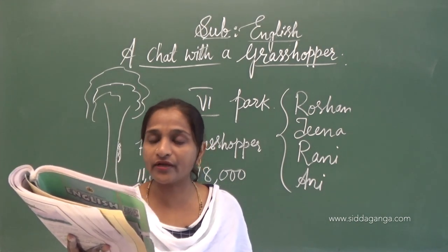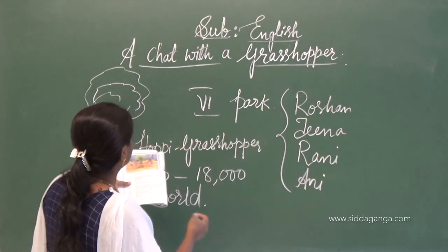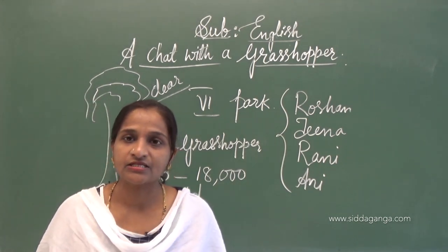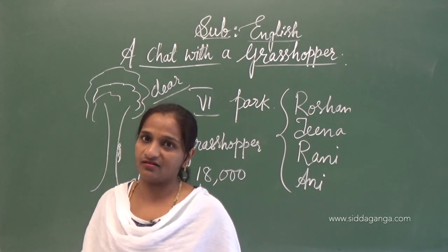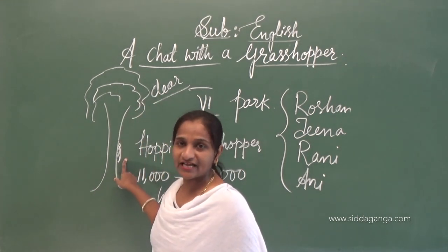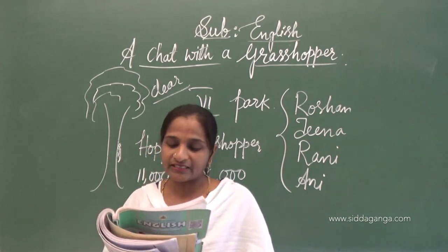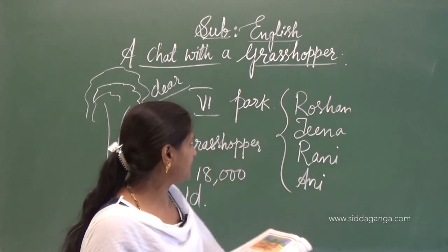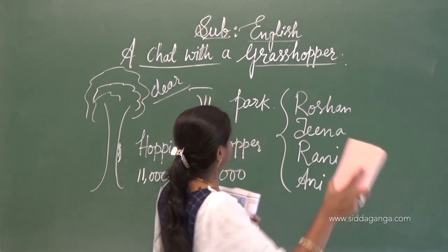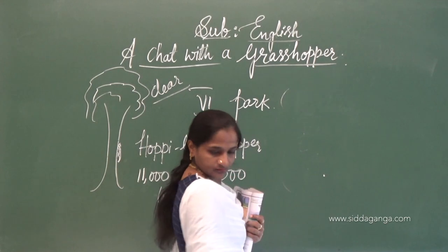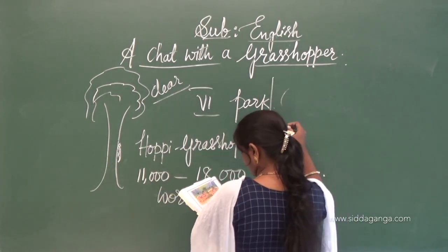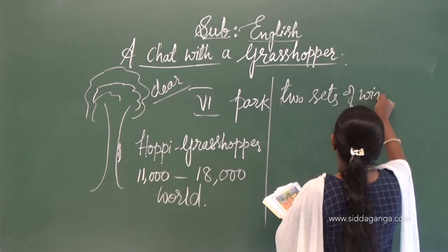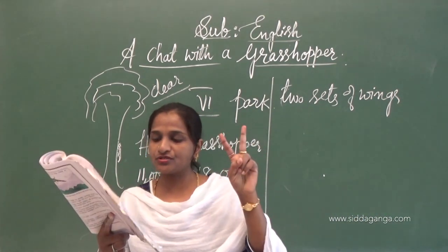Raju asks: Okay, my dear, tell me how you fly? Raju is calling the grasshopper 'dear' because they are now close with the grasshopper. Tell me how you fly? Could you tell me? Hoppy replied: I have two sets of wings. How many sets of wings does the grasshopper have? Two sets of wings, for flying.